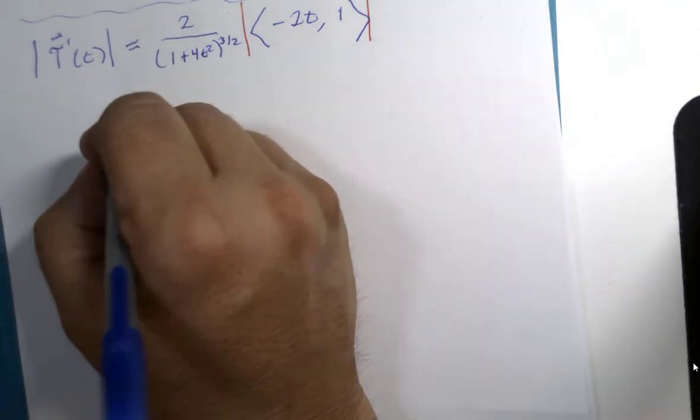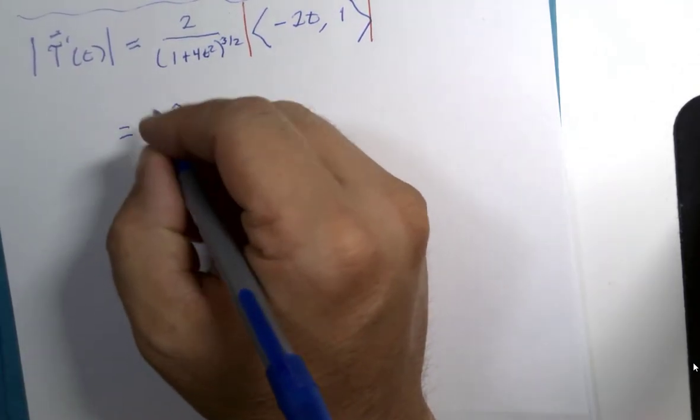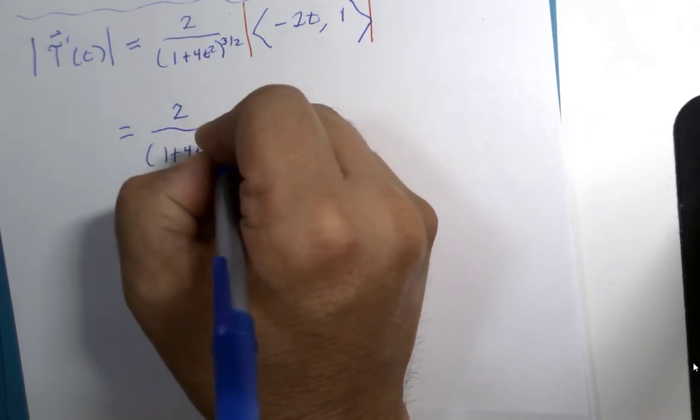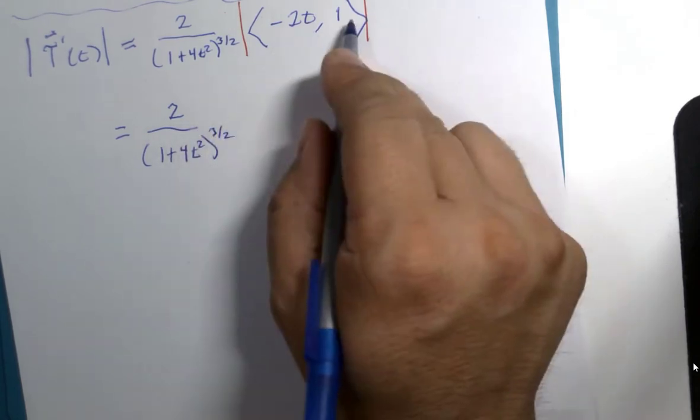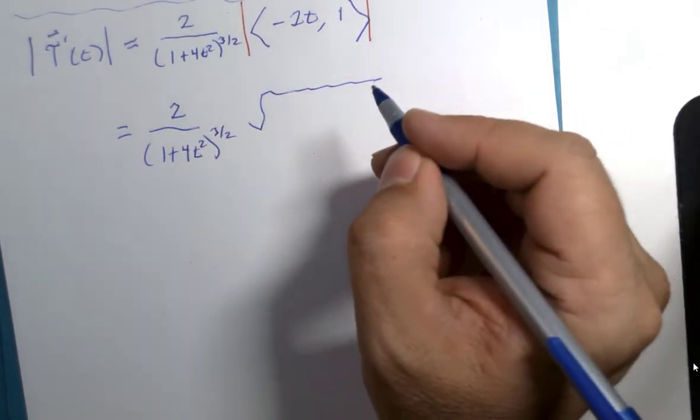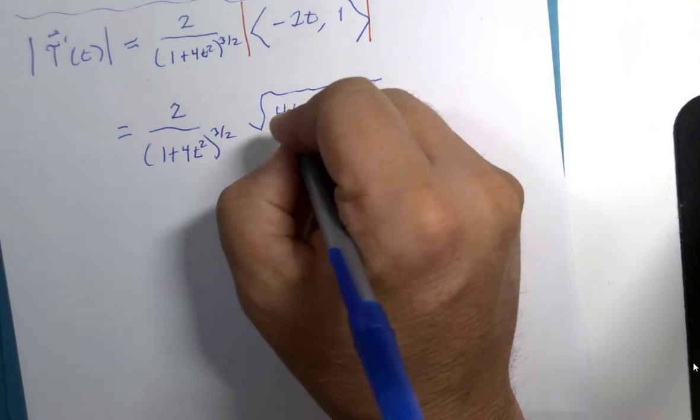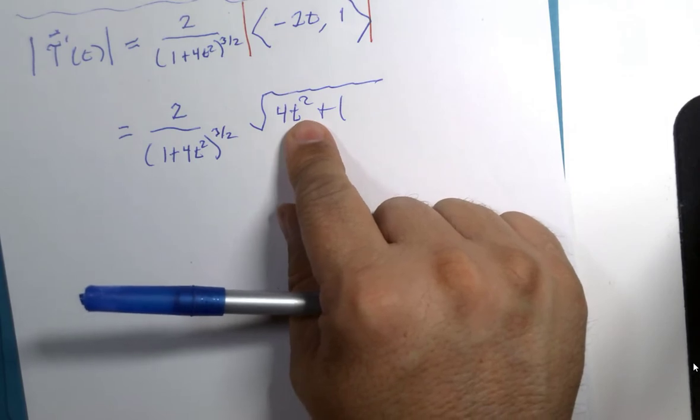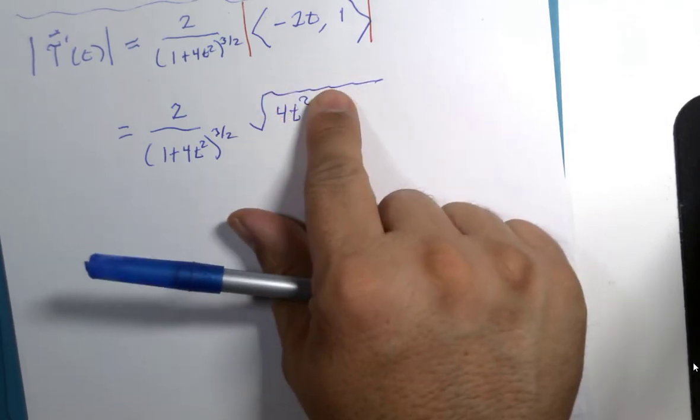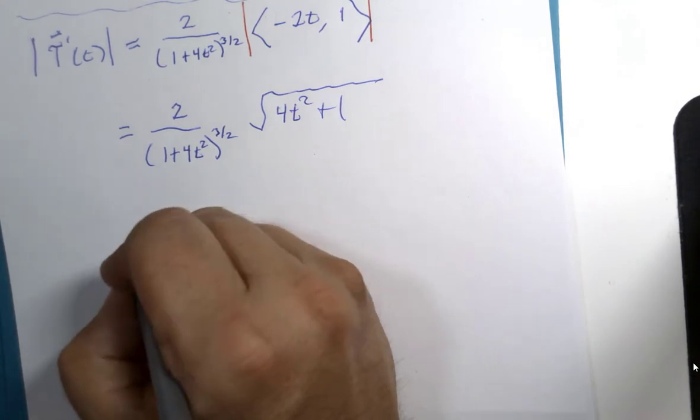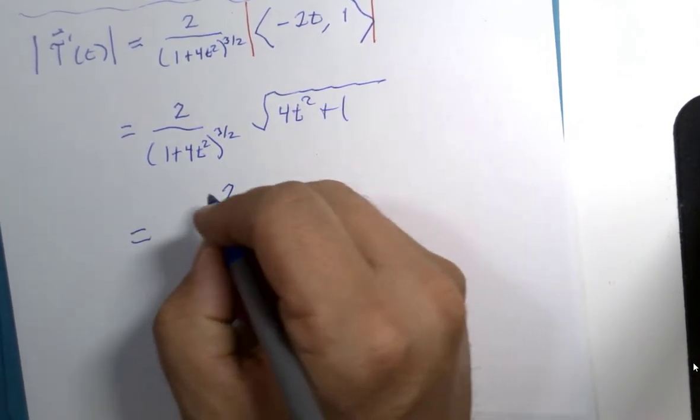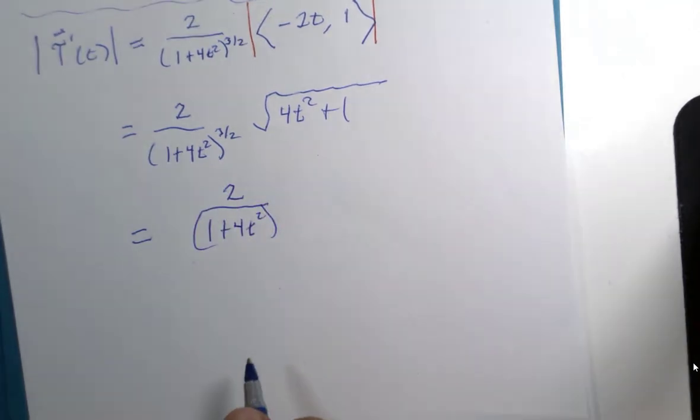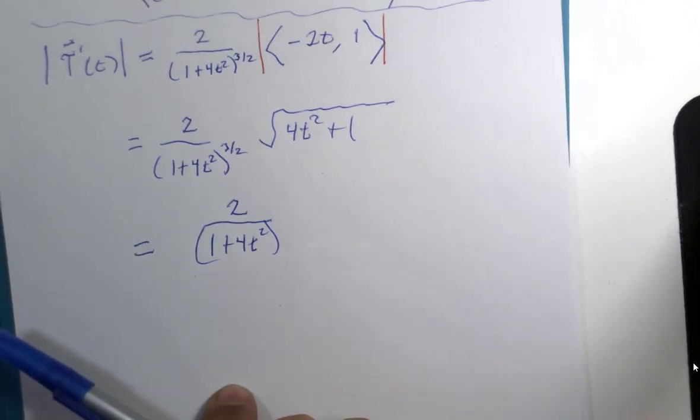So that's 2 over 1 plus 4t squared to the three halves power. And then the magnitude of this is, wait a second, this looks familiar, 4t squared plus 1. Hey, these are the same. This is the half power. This is the three halves power. That's equivalent to this. This is the magnitude of T prime.